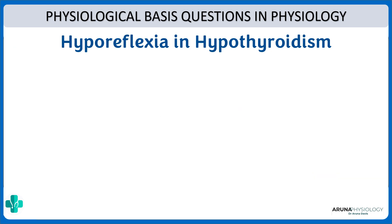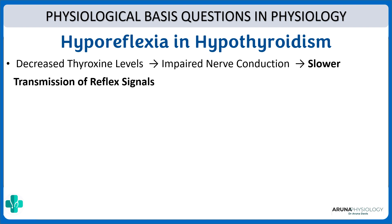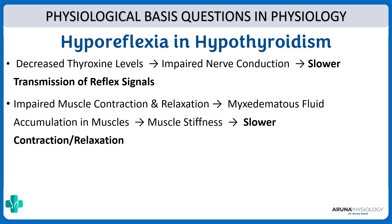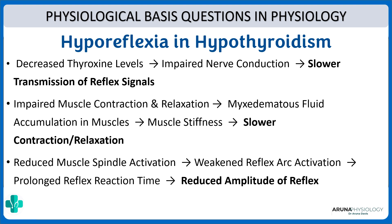Why is there hyporeflexia in hypothyroidism? All reflexes would be diminished. With decreased thyroxine levels there is impaired nerve conduction because thyroxine is needed for proper myelination of neurons; it also stimulates neurotransmitter release and increases the number of receptors — so there would be slower transmission of reflex signals. For the muscle, there would also be impaired muscle contraction and relaxation because of accumulation of fluid inside the muscles causing muscle stiffness and slower contraction and relaxation. On the whole there would be reduced muscle-spinal activation, weakened reflex activation, prolonged reflex reaction time, and thereby reduced amplitude of reflex — leading to hyporeflexia and very sluggish reflexes.